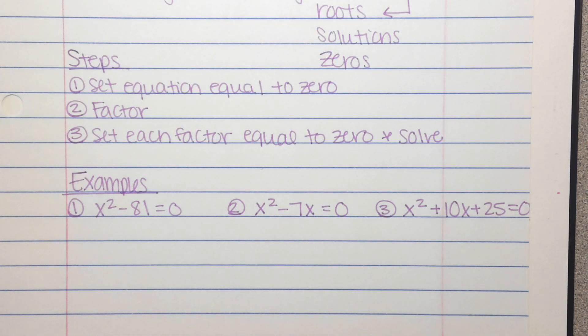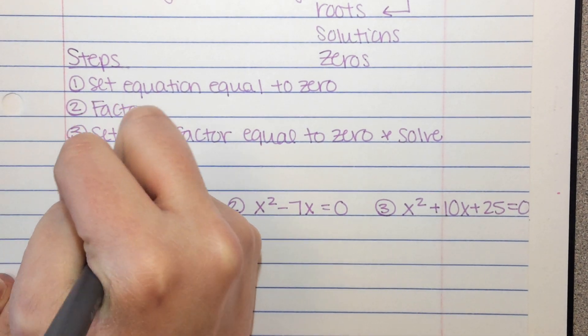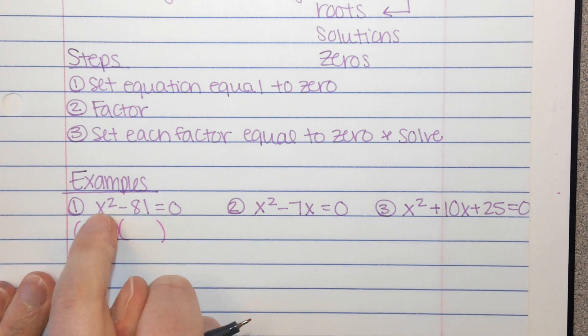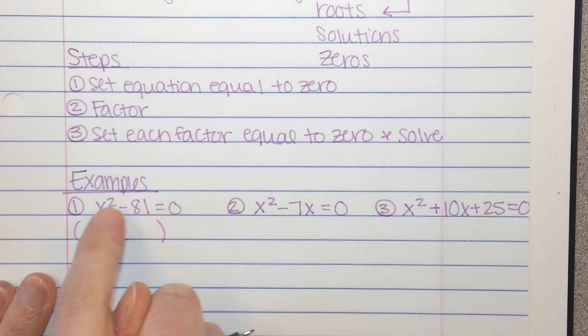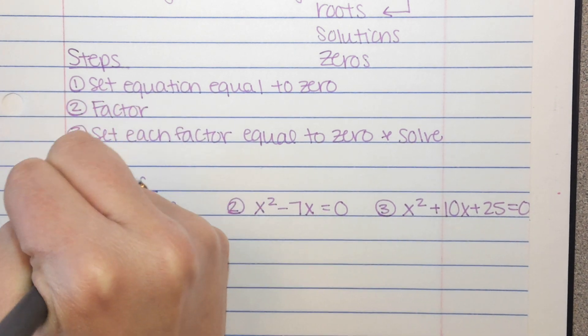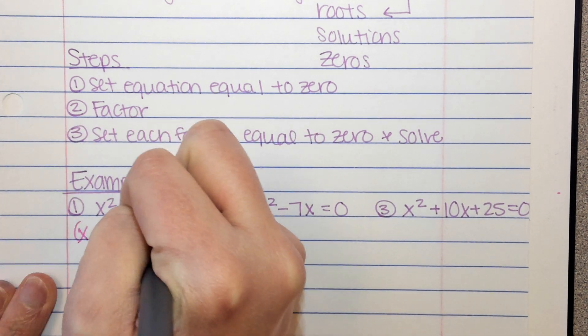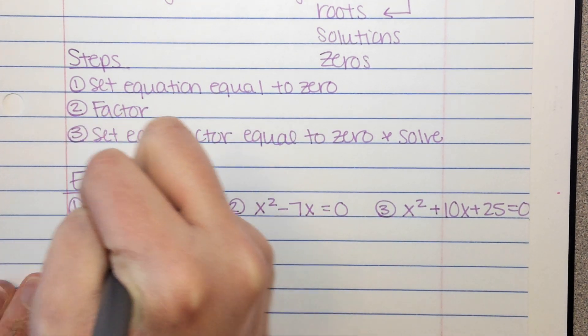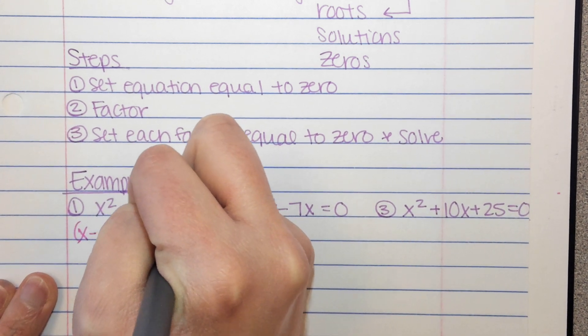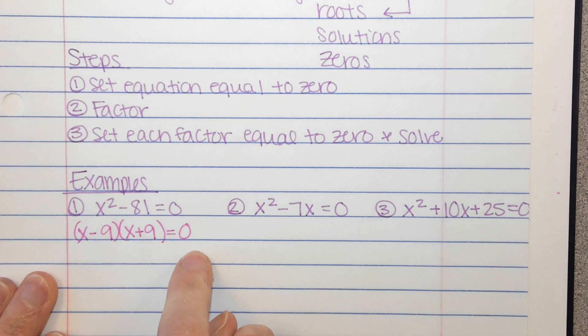Here are our first three examples. So example number one, we have x squared minus 81 equals 0. It's already set equal to 0, so we can go straight to factoring. And you might notice this is one of our special cases, the difference of two squares. So I know x times x makes x squared, 9 times 9 makes 81. I need a negative and a positive.